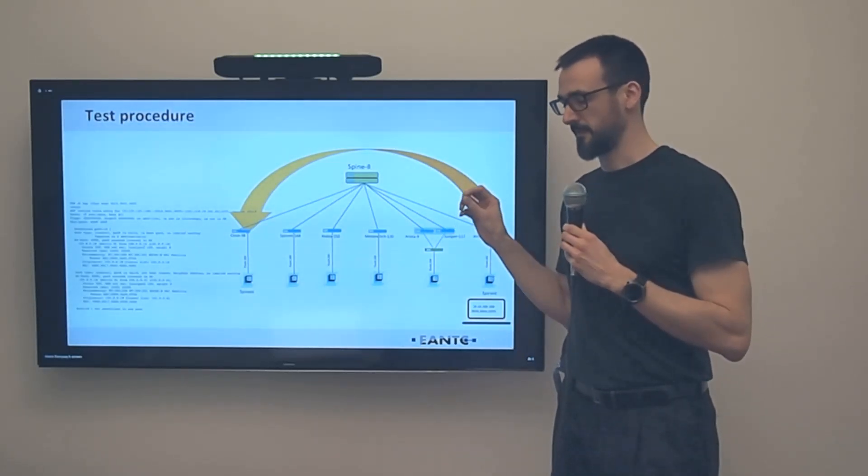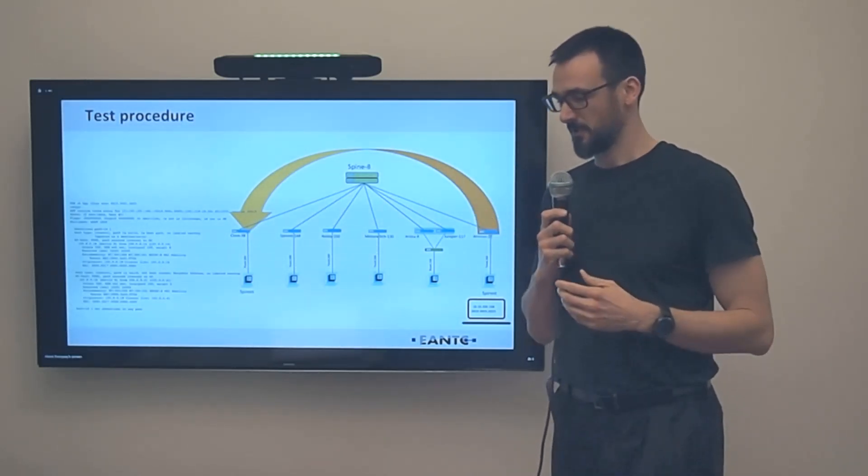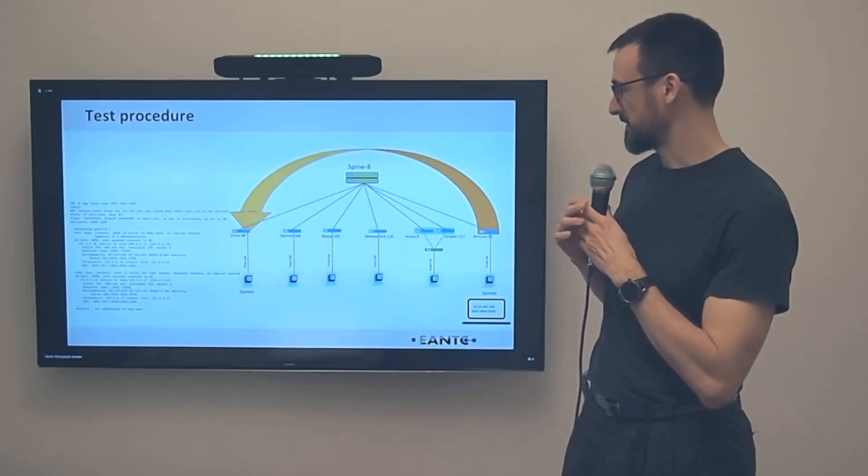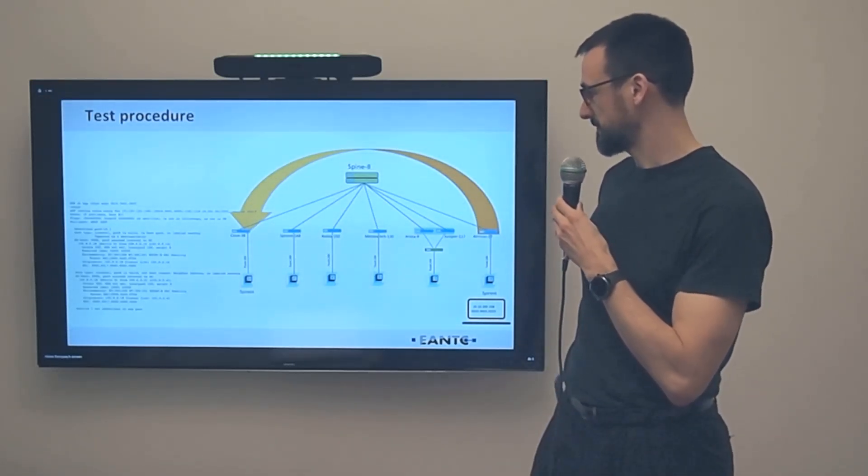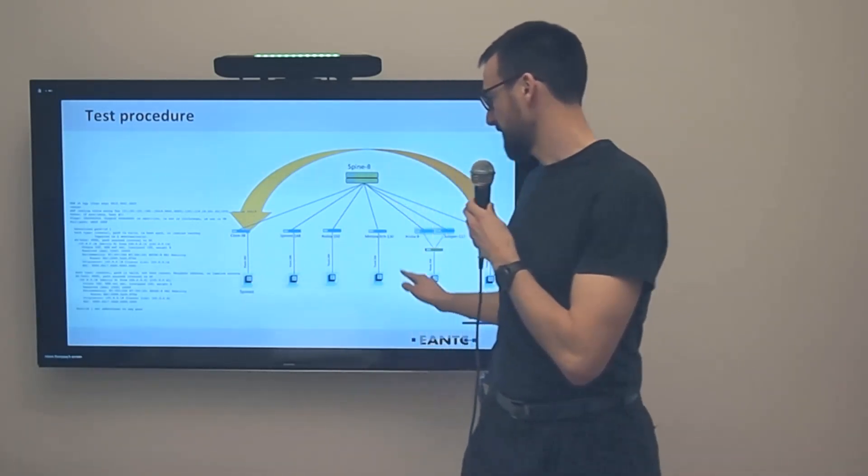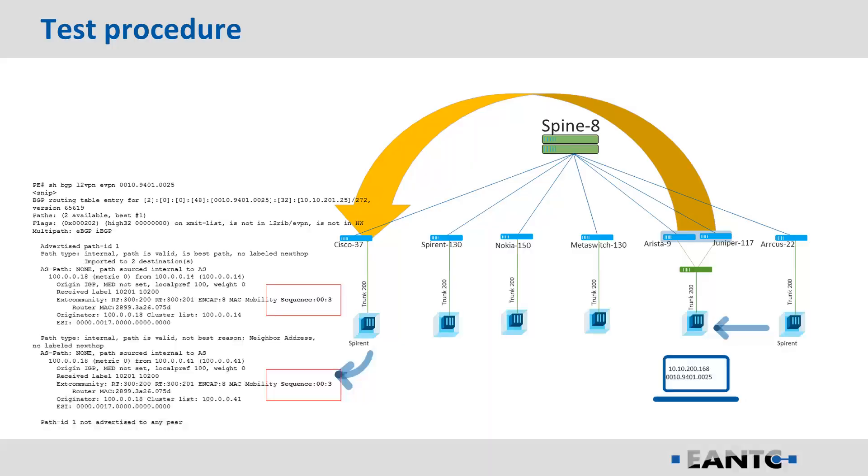That will be received by all the remote peers. Every PE in the network will therefore receive an updated route type 2 with the incremented sequence number as we are moving along from one sender to another.